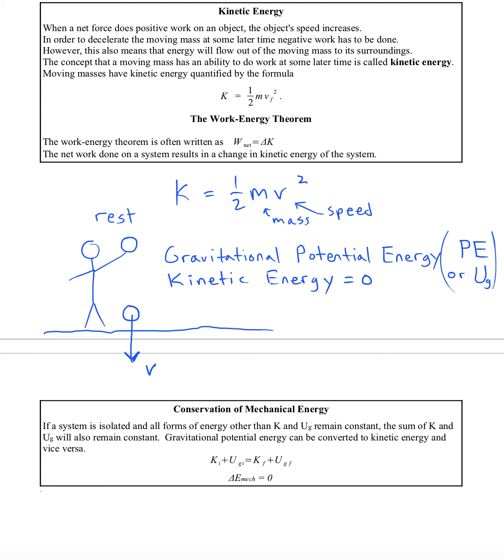So how much gravitational potential energy does it have? Well, we could say that the potential energy, which is UG final, we can call that zero. It is kind of common to call the ground zero.